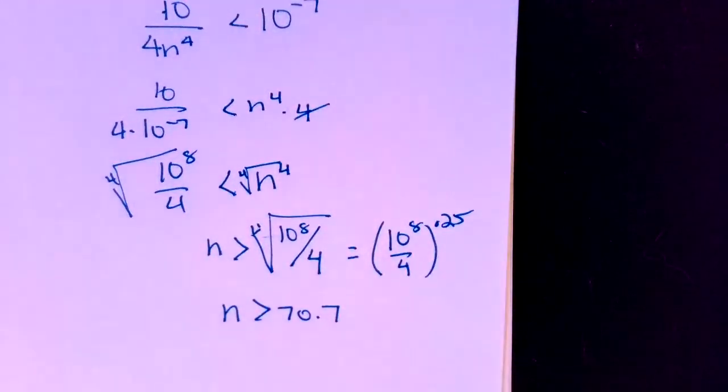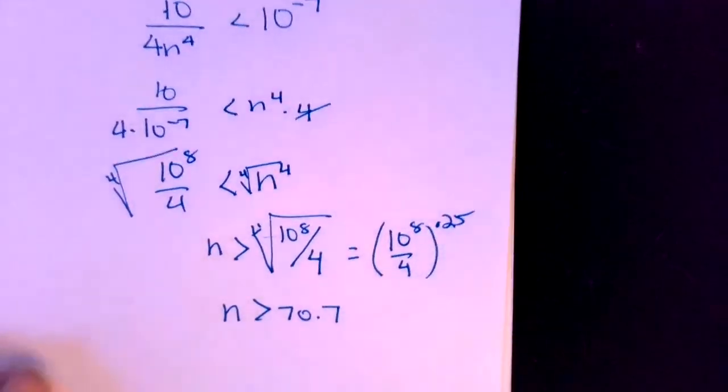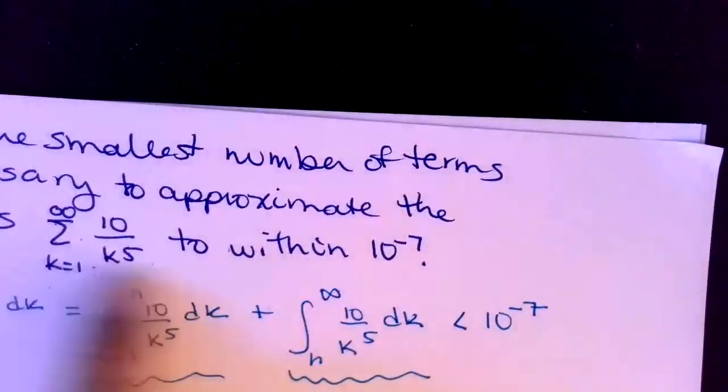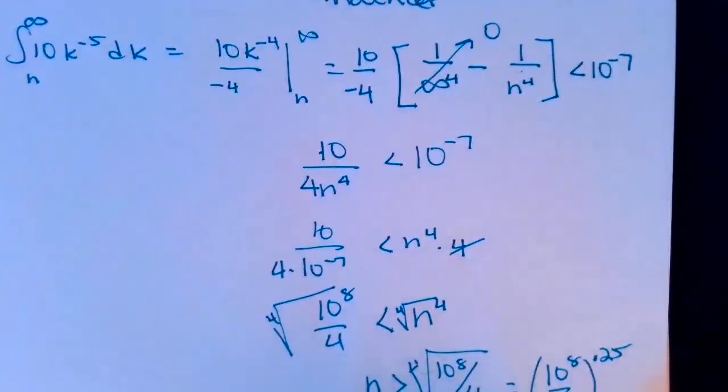Since n in my series is representing a counting number, I would need n—the minimum number would be 71 terms.